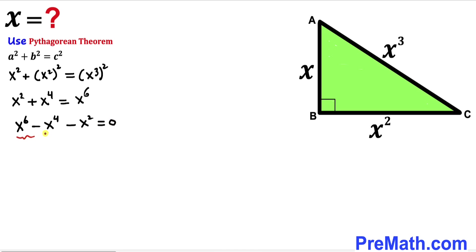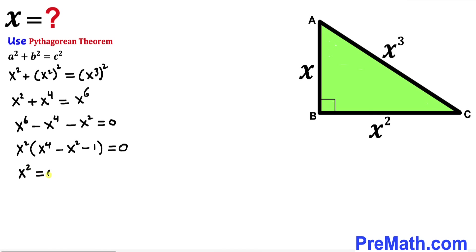We can factor out x squared from the equation. So we separate the factors: x squared equals zero gives one solution, and the second factor x to the fourth minus x squared minus 1 equals zero.